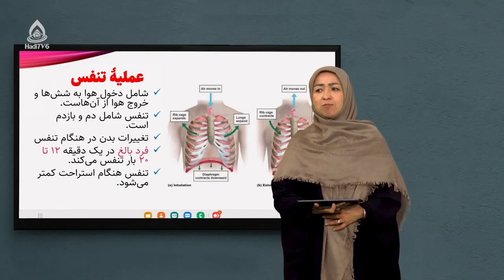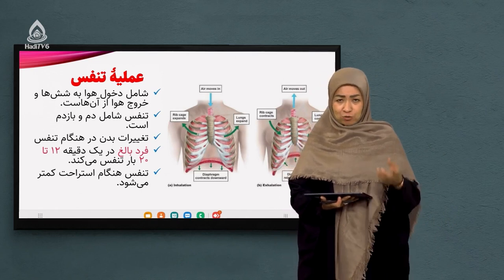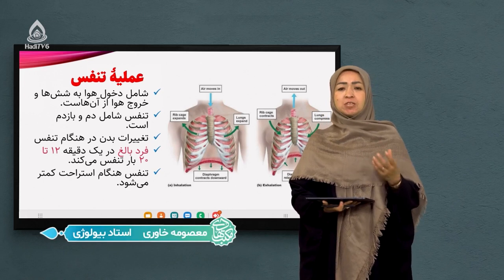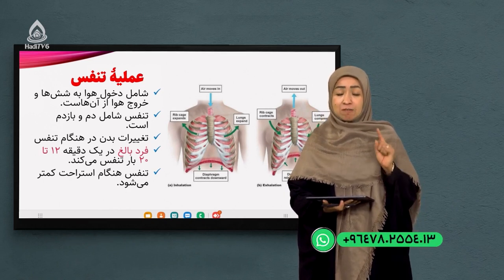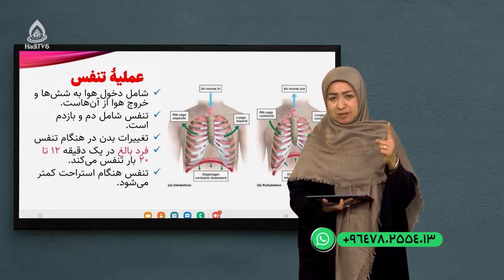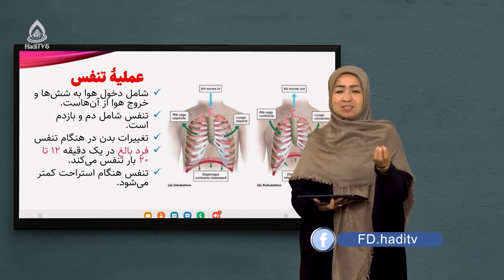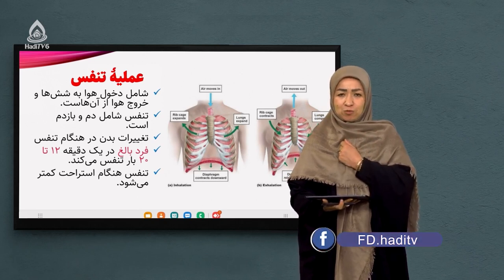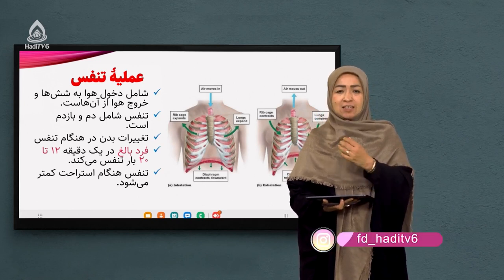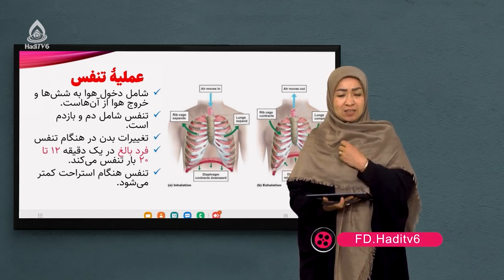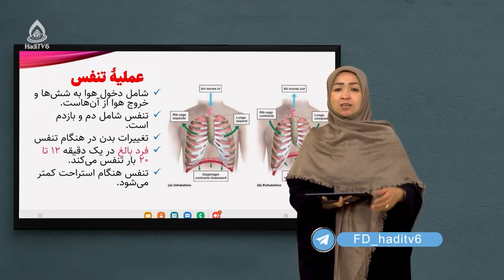در یک دقیقه چند بار نفس میکشیم؟ اگر یک شخصی را که خودش نمیداند ما نفس‌هایش را بشماریم، میبینیم که یک فرد بالغ در یک دقیقه دوازده الی بیست بار نفس میکشد. توجه کنید که دم و بازدم یک حرکت گرفته میشود. میتوانید دست برادر یا خواهر خود را روی قفصه سینه بگذارید و حرکت آن را بشمارید.